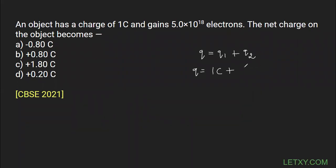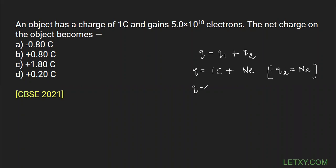There is a formula q equals Ne — I hope all of you remember this formula. Note that this should be capital N, because small n is used to represent the number density of electrons. So Q2 equals one coulomb plus Ne. This formula comes from the quantization of charge, so q equals Ne.